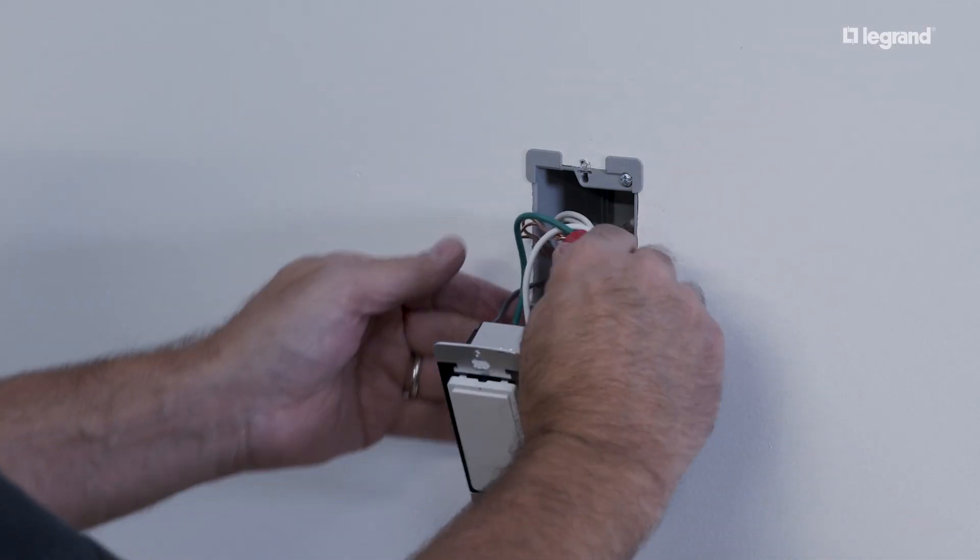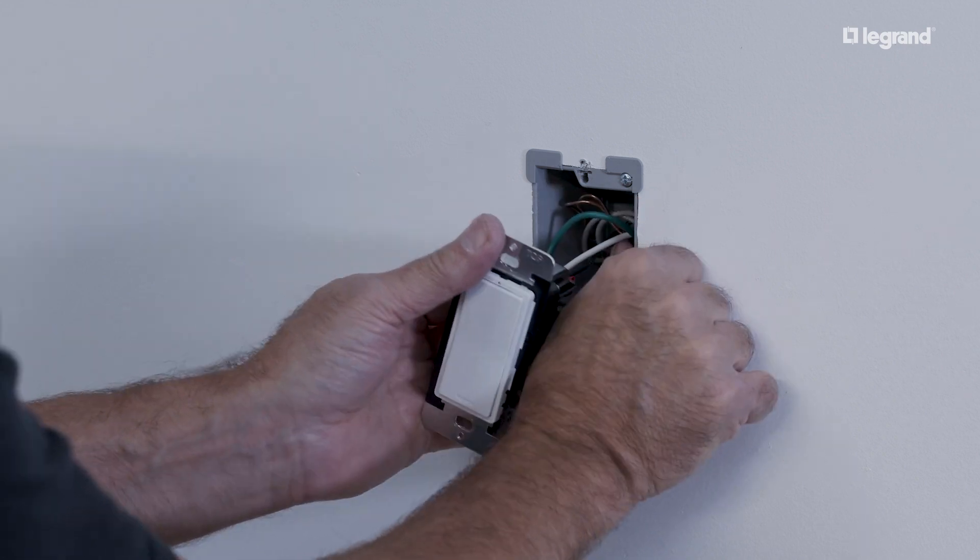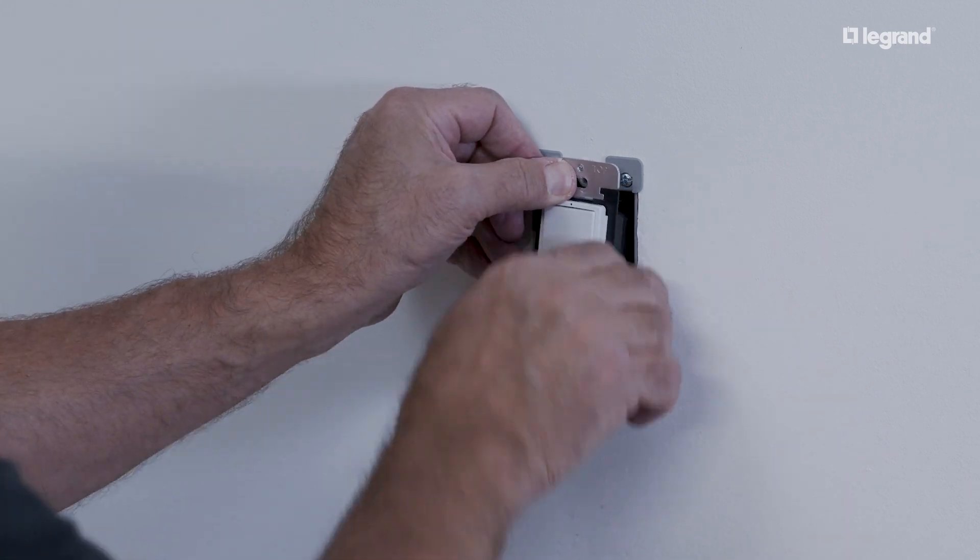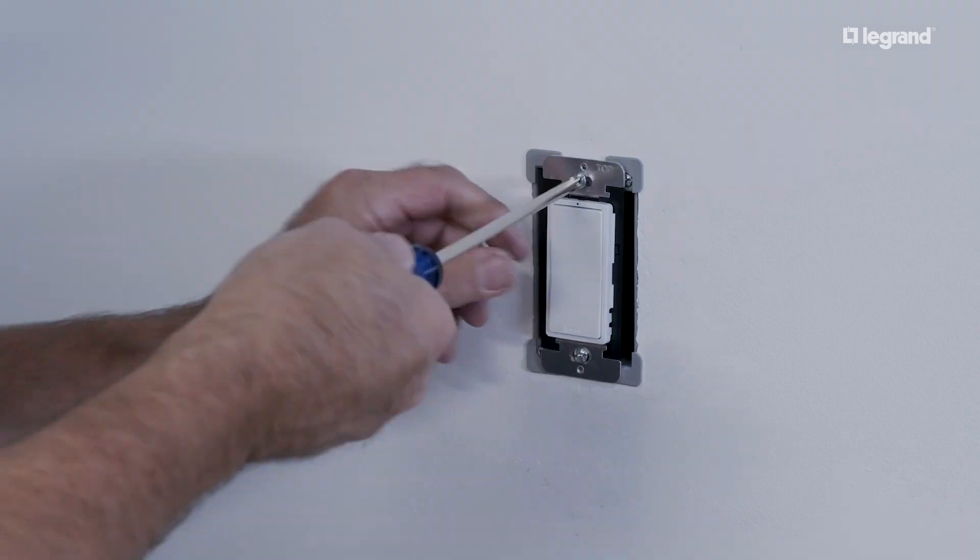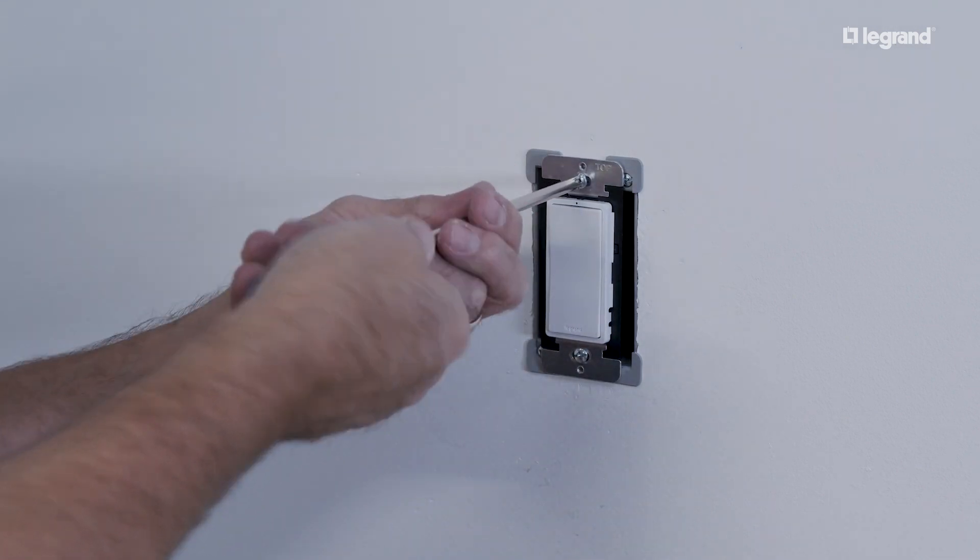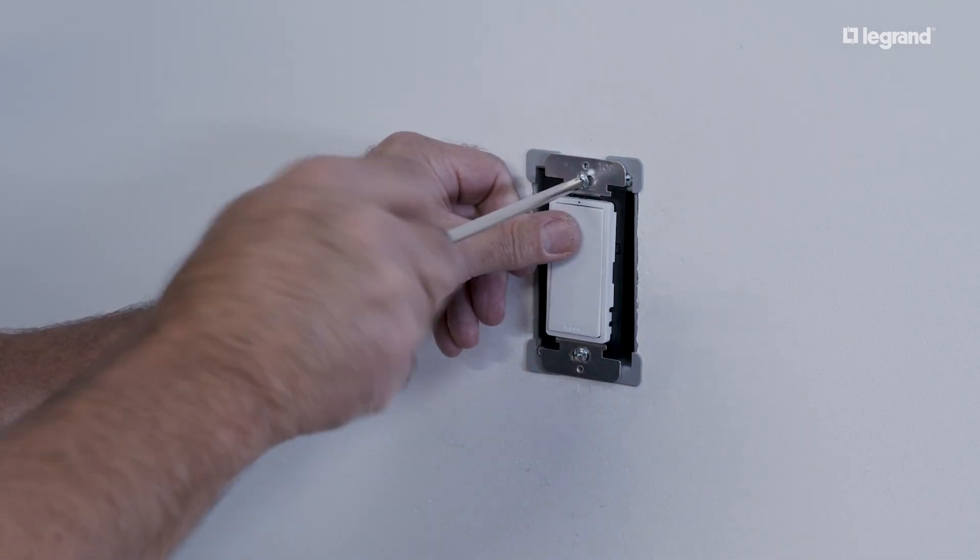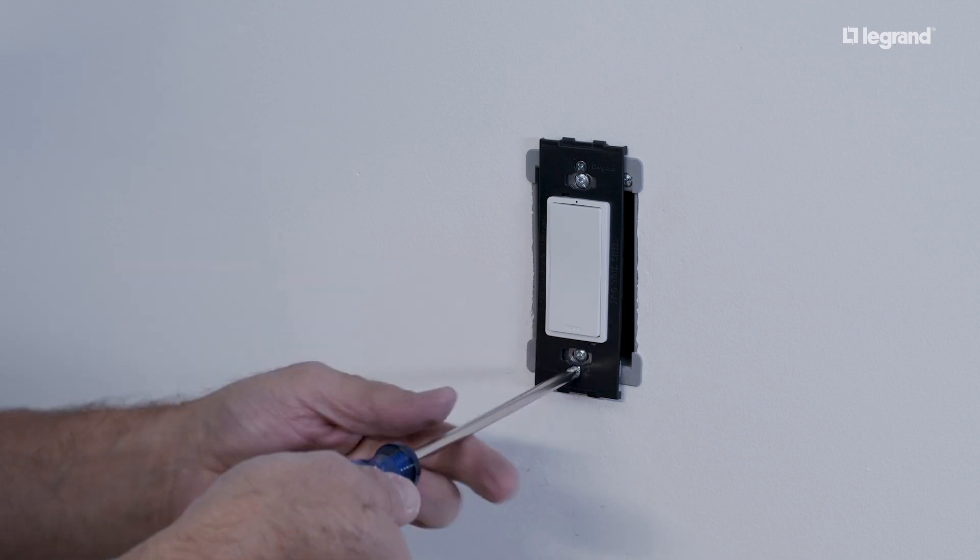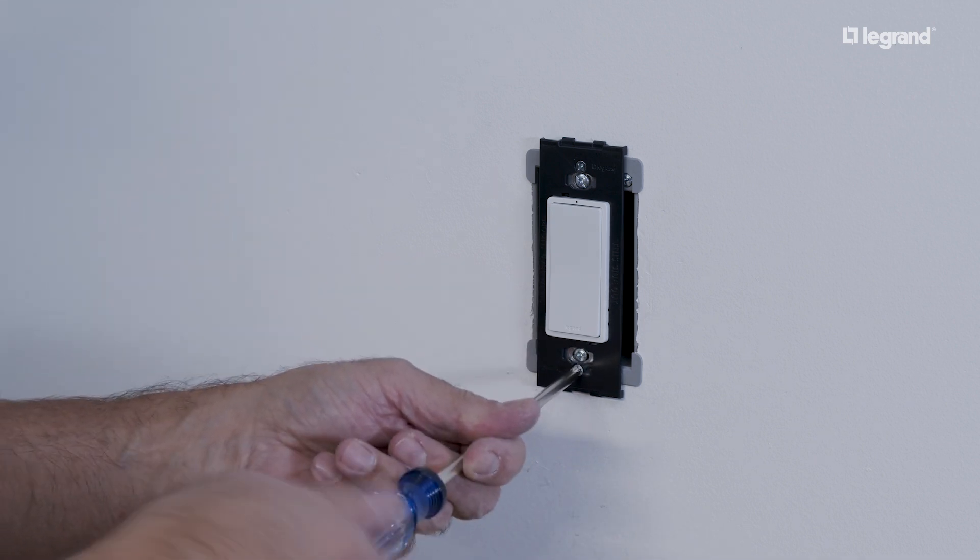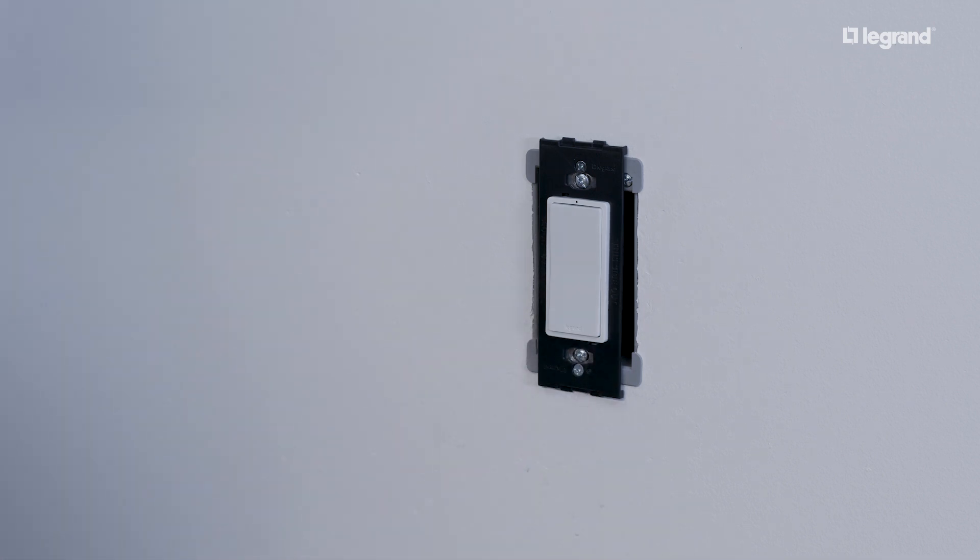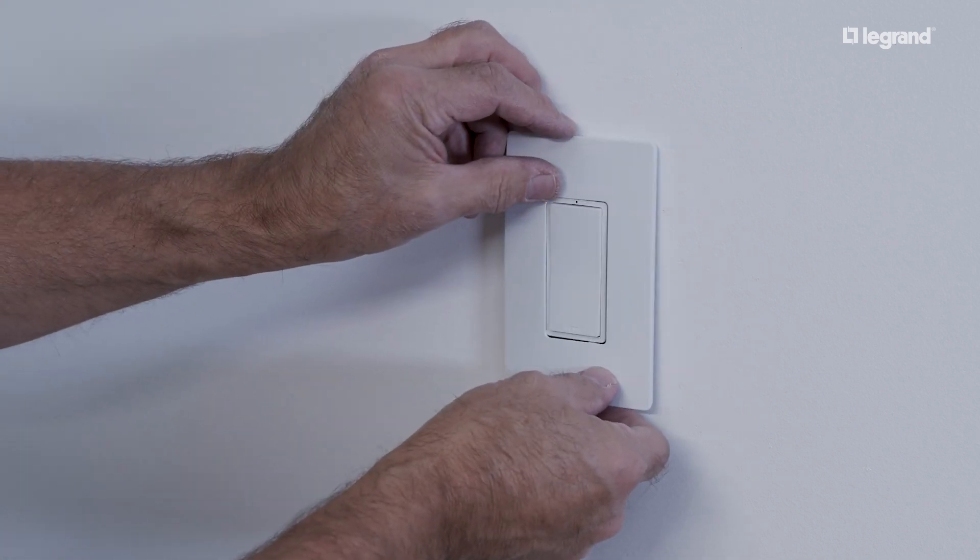Once all screws are secured down to the body of the device, carefully push the device back into the electrical box, ensuring wires are folded up behind the device. Secure the device to the box using the included long screws. Next, take the black frame from the back of the wall plate and attach it to the switch with the included short screws. Finally, snap the wall plate onto the device and frame.